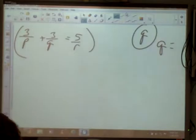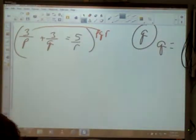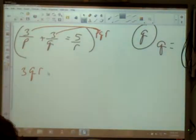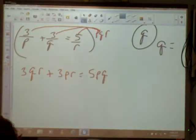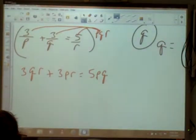Just like y'all said, we're going to distribute PQR to the whole thing. When I take PQR to the 3, the P cancels out, so I'll have a 3, Q, and R. When I go to the second 3, the Q cancels out, so I'll have 3, P, and R. When I go to the 5, the R cancels out, so I'll have 5, P, and Q. We distributed the common denominator to get rid of the fraction.